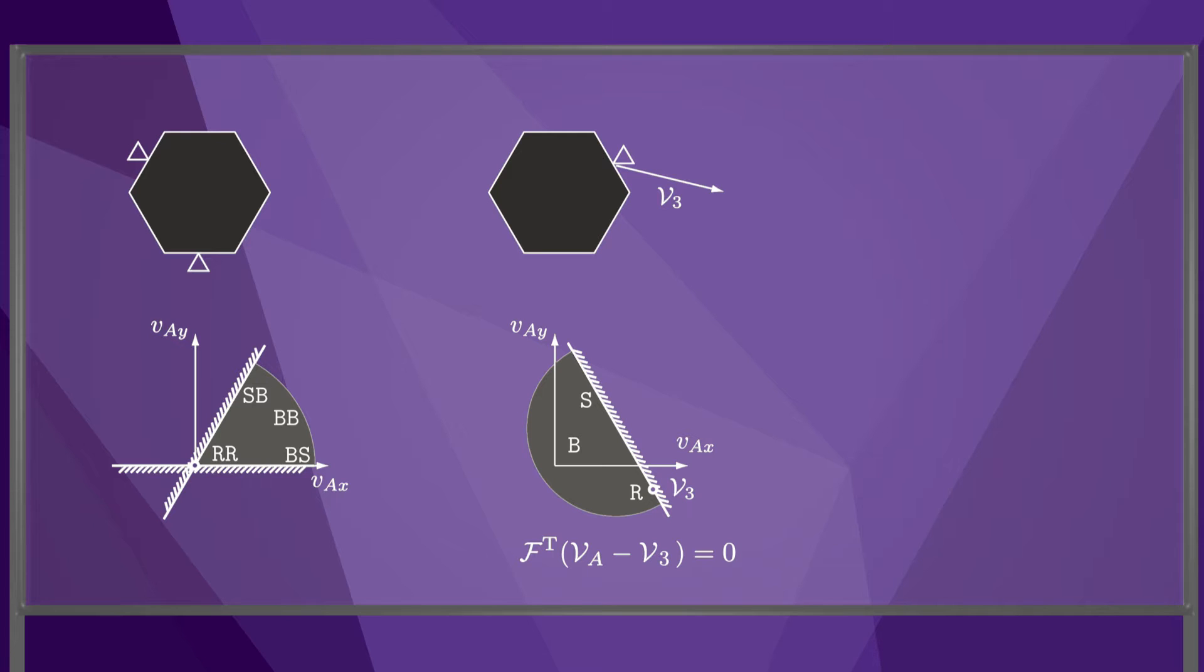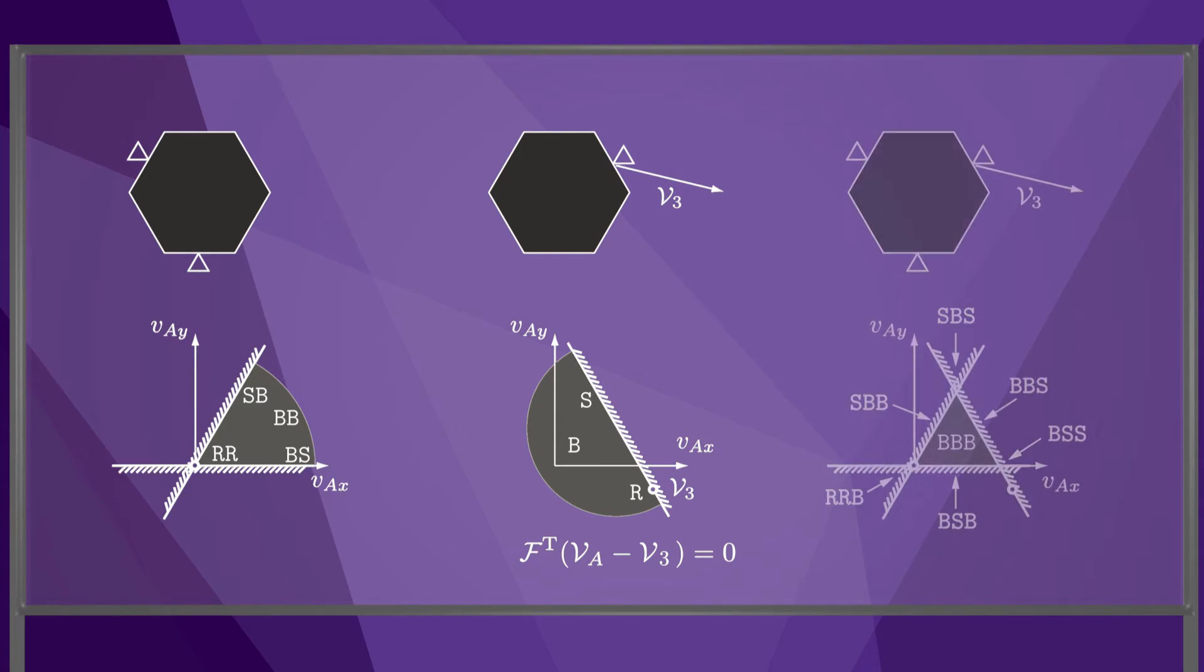Intersecting the half spaces for the three contacts, we get this triangular region of feasible twists for the hexagon.